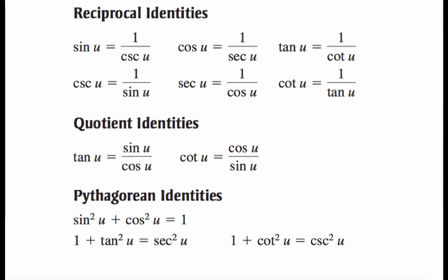As we're going through this stuff, you want to have your trig sheet out that I gave you guys. We're going to be focusing on those reciprocal identities, quotient identities, and Pythagorean identities that we introduced back in chapter 4.